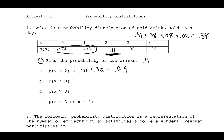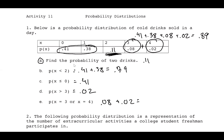Part C: P(X ≤ 0). No number is less than zero, but x = 0 is included, so the answer is P(0) = 0.41. Part D: P(X > 3). The only value greater than three is x = 4, so P(4) = 0.02. Part E: P(X = 3 or X = 4) = P(3) + P(4) = 0.08 + 0.02 = 0.10.